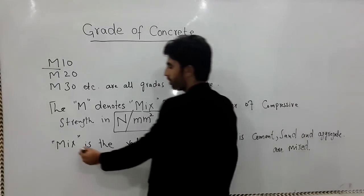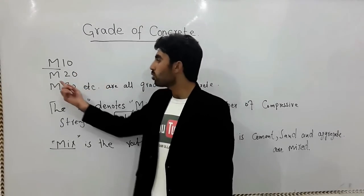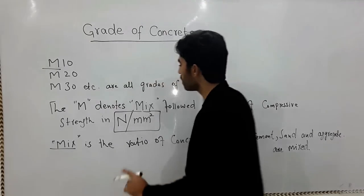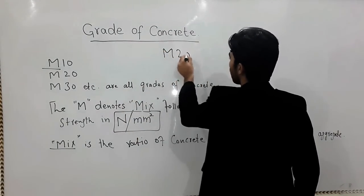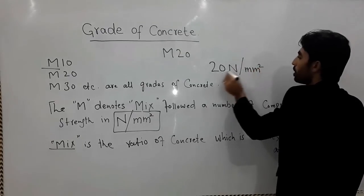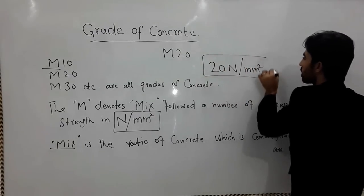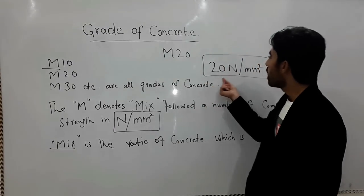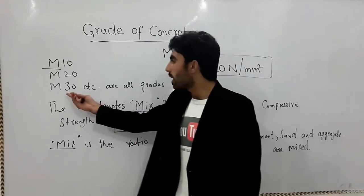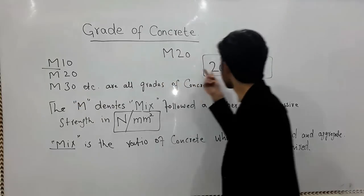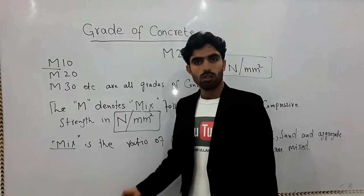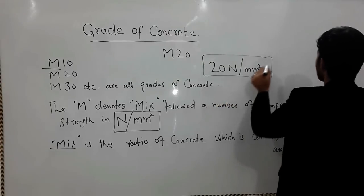Now what does M10, M20, M30 mean? These are all grades of concrete. For example, M20 means 20 newton per millimeter square compressive strength of the concrete. If you put 10, then 10 N/mm² is the compressive strength. If you write M30, then 30 N/mm² is the compressive strength of the concrete.